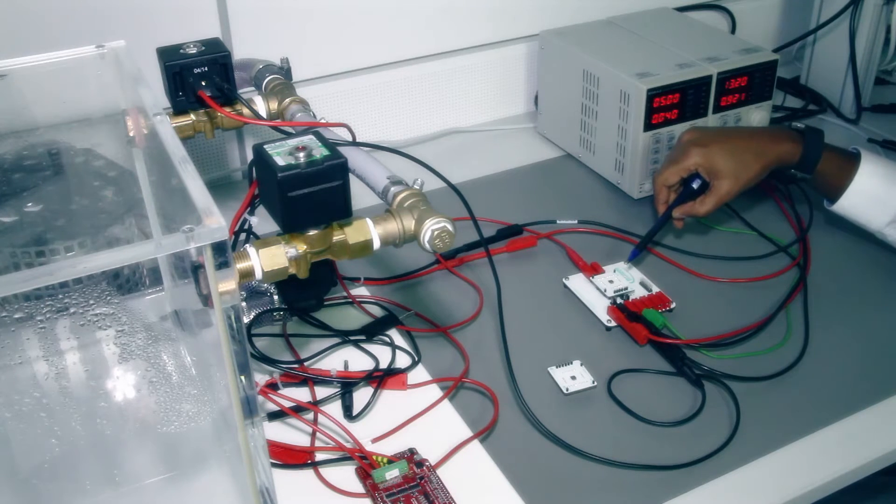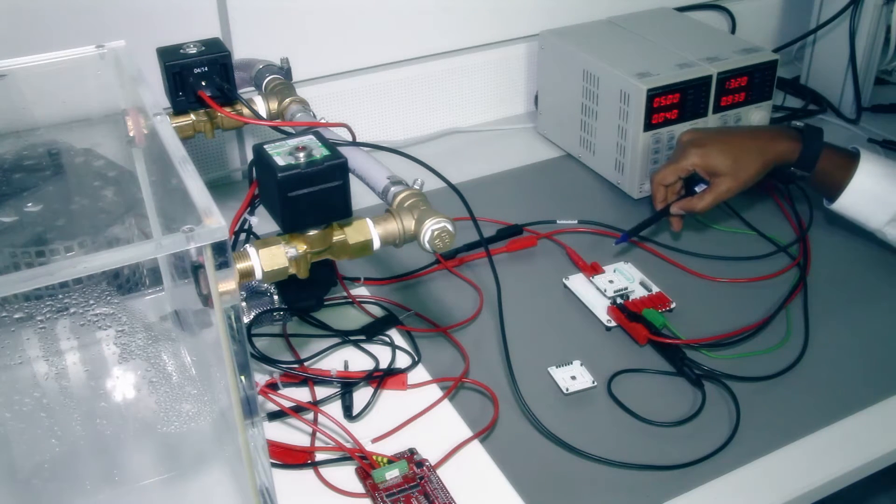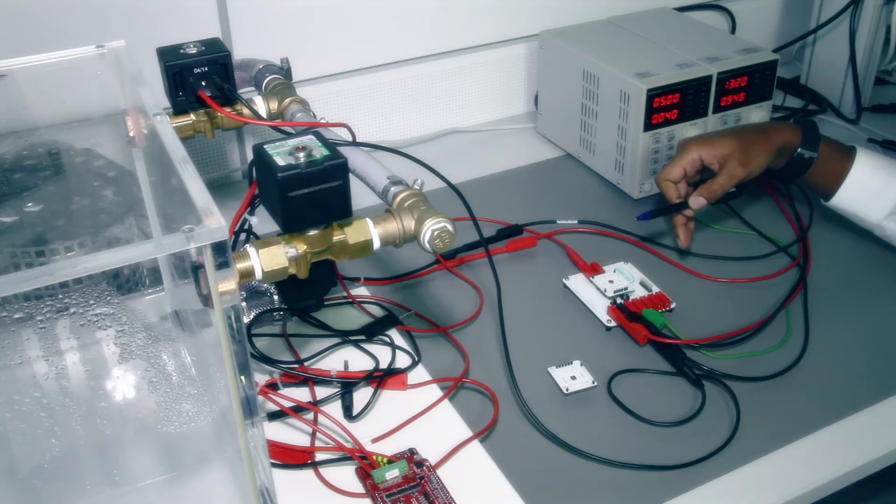Here we've connected the high ohmic BTS7200-2EPA, which can drive 5 watt lamps or 0.5 amps.